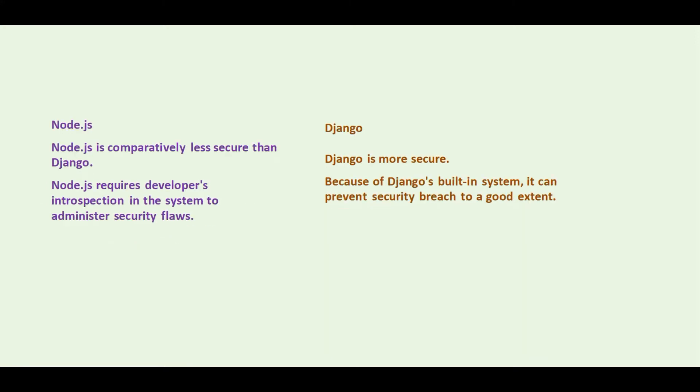Node.js is comparatively less secure than Django. Node.js requires developer introspection in the system to administer security flaws. On the other hand, Django is more secure. Because of Django's built-in system, it can prevent security breaches to a good extent.